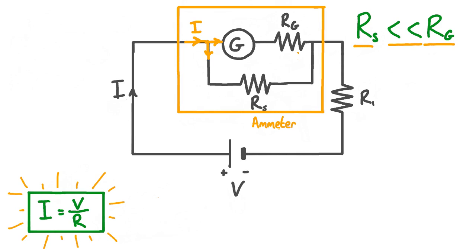Because we're trying to find a resistance, let's rearrange Ohm's law to make R the subject. This gives us R equals V over I. Because we want to find the resistance of the shunt resistor Rs, V in our equation should be the voltage applied across the shunt resistor, which we call Vs, and I will be the current in the shunt resistor, which we call Is. Let's label Is in our circuit diagram, and we can also label Ig, the current in the galvanometer.